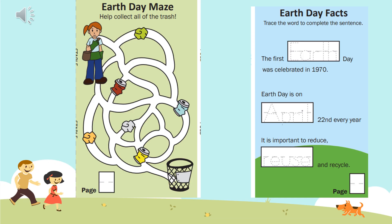We're inside of our book right now. On the left side, you see the Earth Day maze where it says 'Help collect all of the trash.' Look at the bottom of the page where you see the word 'page' with an empty little box — this is page number two. Write the page number two in that box. When you're done, help the girl pick up all the trash along the way to the trash can. Trace your pencil and find your way along the maze to the trash can.